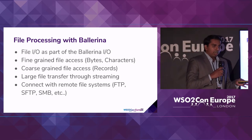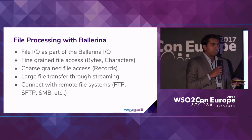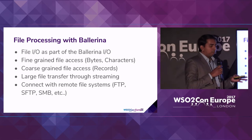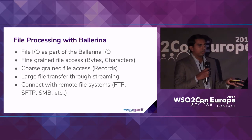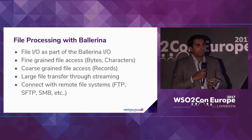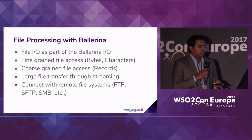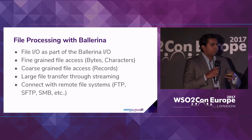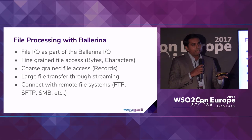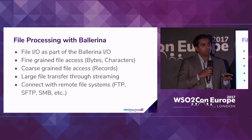In Ballerina we have different levels of capabilities when it comes to accessing files. We consider file IO as part of the Ballerina IO APIs. In that file IO API we provide different levels of access to your files — fine-grained access like reading byte-level, character-level, or record-level information, as well as coarse-grained access like reading the entire file or streaming the file from one place to another.